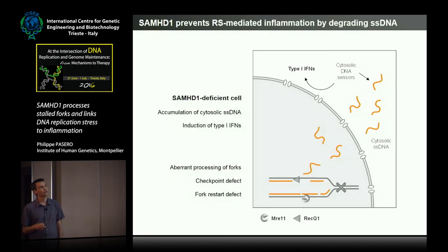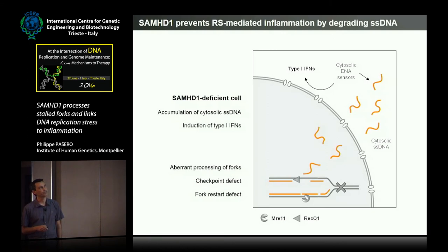In AGS patients, what we can think is that there is this low level of chronic replication stress that leads to the accumulation of these cytosolic DNA species and leads to this chronic inflammation.